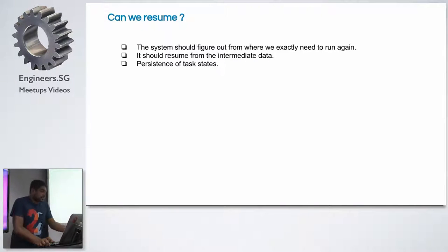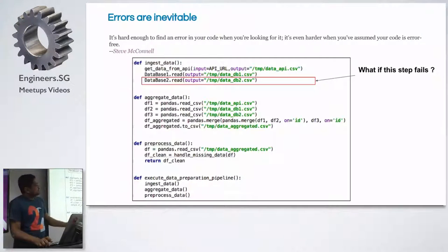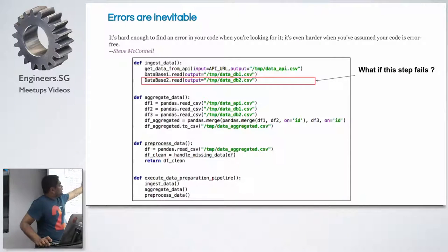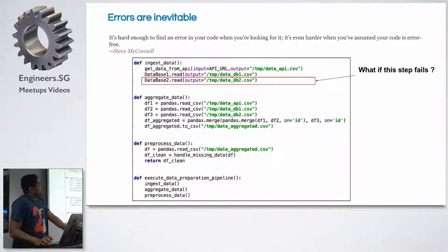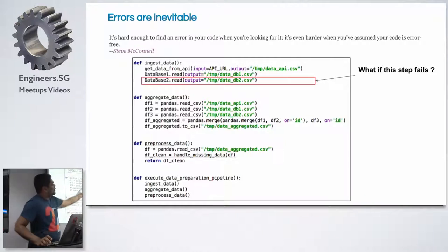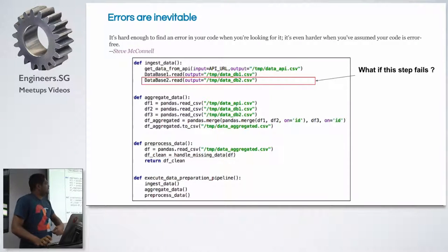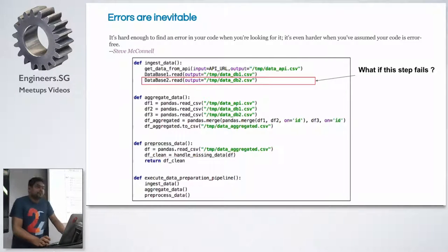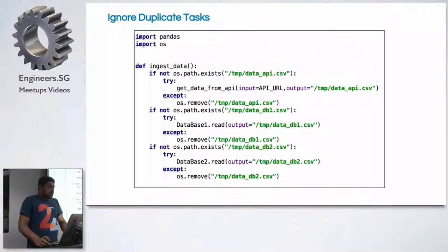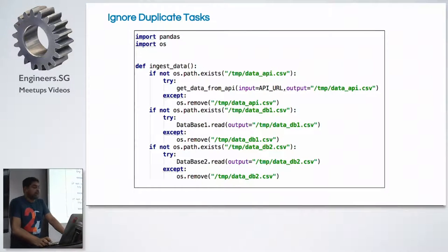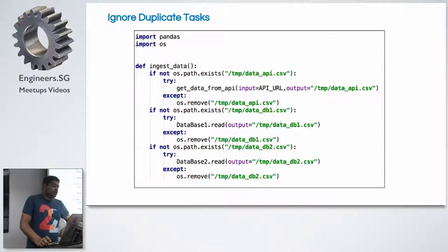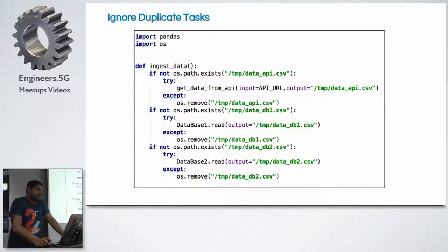We need to persist task state. Another point: if you start reading and writing into data_db2.csv and it fails midway, you have that CSV file but it's a dirty file. You need to think about how to make this operation atomic — basically, you need atomic file operations.